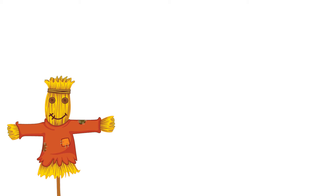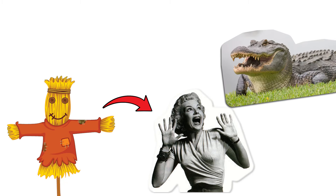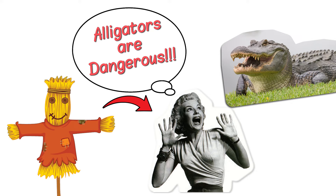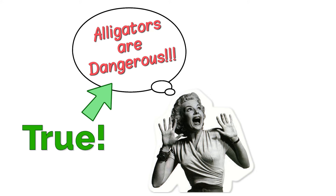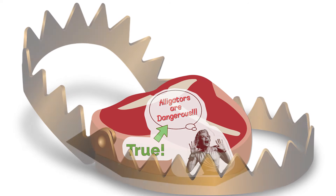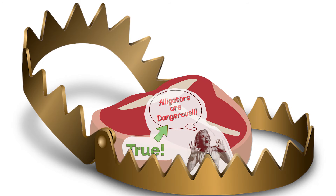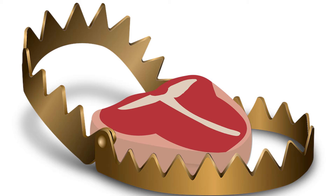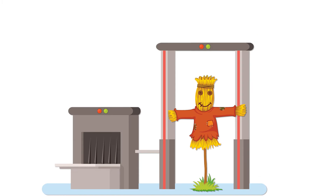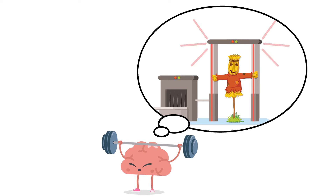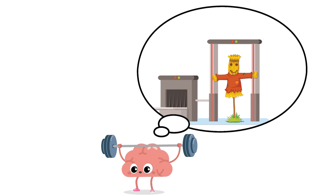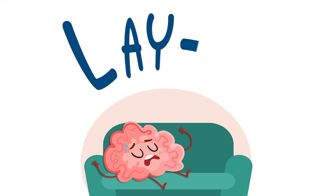Strawman arguments often work by appealing to a strong emotional belief we might already have, and they could be true for extra deception. This is the bait. We don't see the trap because our brains have locked into that juicy steak sitting right there. Their detection also typically requires a bit of mental effort — quite a barrier, because our brains be lazy.